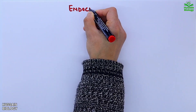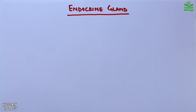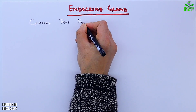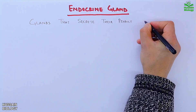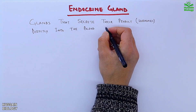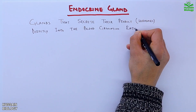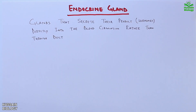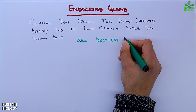In the endocrine system we have endocrine glands. These are the glands that secrete their product — hormones — directly into the blood circulation rather than through a duct. That's why these glands are also known as ductless glands.